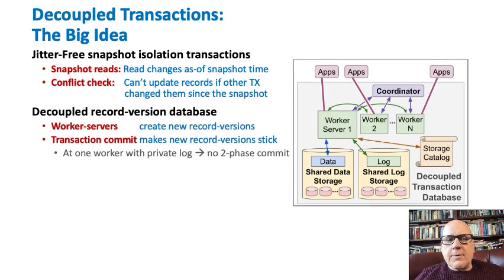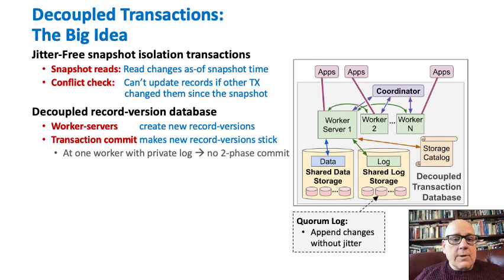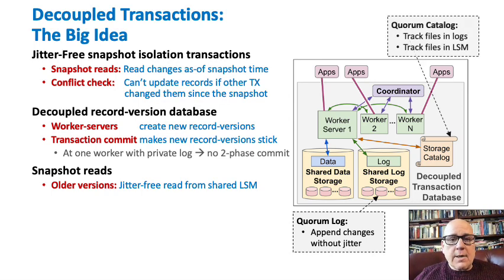So we're doing a record version database. We have lots of worker servers, and the application calls them and they do the transaction — creating new record versions for every record that's updated. Transaction commit makes those record versions stick and be visible throughout the system. The commit happens at one worker with its own private log, using no two-phase commit across workers. You can do this because the Quorum log can take appended changes without jitter — you don't have to get to every replica of the log, just enough replicas. Snapshot reads can be done by looking at older versions in a shared LSM and shared storage, using a catalog accessible very quickly via Quorum.